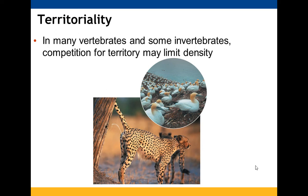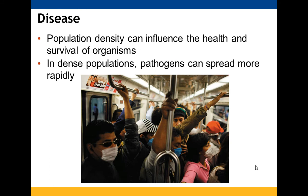Disease is particularly timely — population density can influence the health and survival of organisms. In dense populations, pathogens spread more rapidly. This is relevant to COVID-19: in areas where many individuals are in smaller buildings or environments, it is much easier for the pathogen to spread.